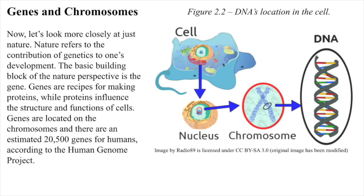The results show how environmental effects on behavior differ based on the genotype, especially stressful environments on genetically at-risk children. Genes and Chromosomes. Nature refers to the contributions of genetics to one's development. The basic building block of the nature perspective is the gene. Genes are recipes for making proteins, while proteins influence the structure and functions of cells. Genes are located on the chromosomes, and there are an estimated 20,500 genes for humans, according to the Human Genome Project.